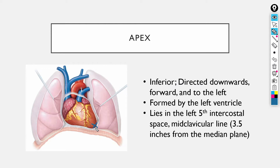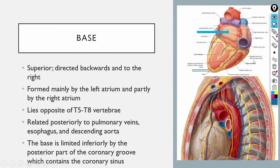Starting with the apex: it is the inferior point formed by the left ventricle, directed downwards and towards the left side. Anatomically it lies in the left fifth intercostal space at the mid-clavicular line. Here you would feel the maximum impulse anywhere on the chest in a person with a normal-sized heart.